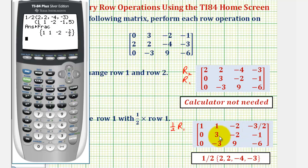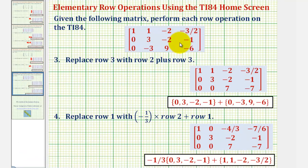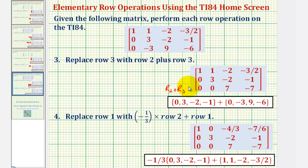Now we'll take this matrix and perform two more row operations. Here's the same matrix — we want to replace row three with row two plus row three. So this new row three is row two plus row three. The original row two plus the original row three should give us this result. Let's go ahead and verify this.